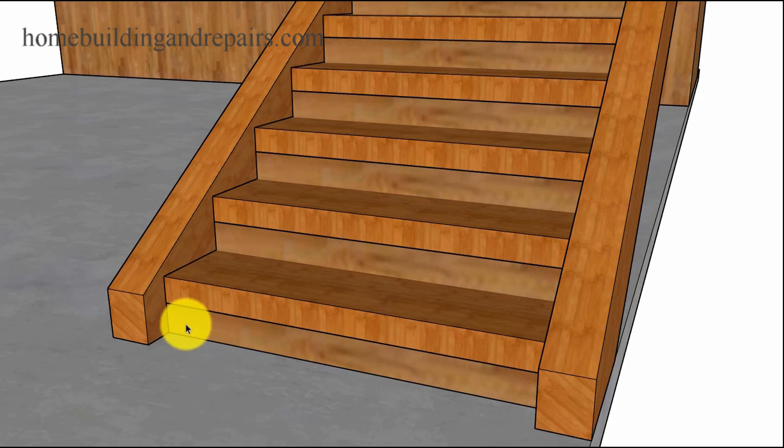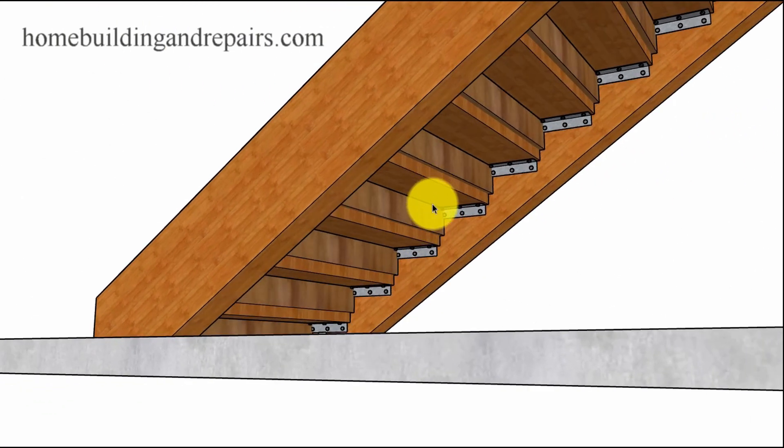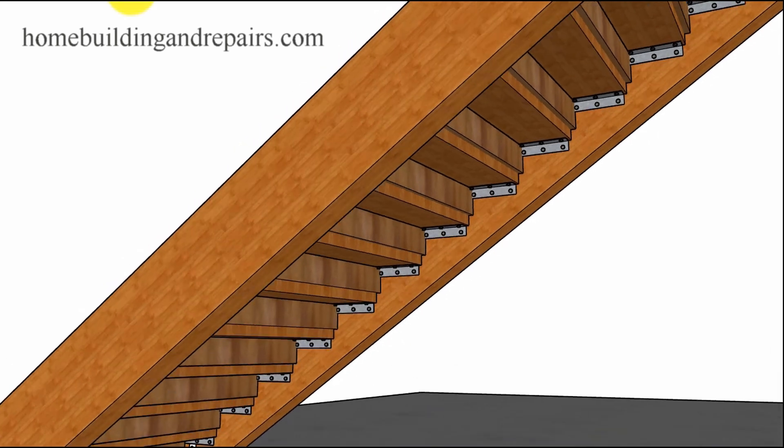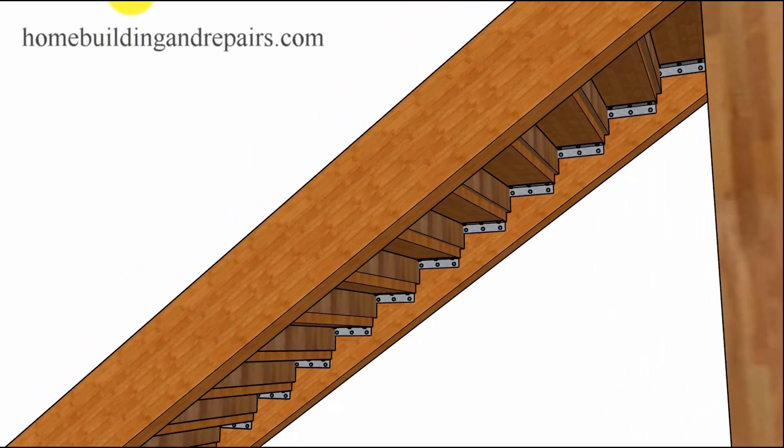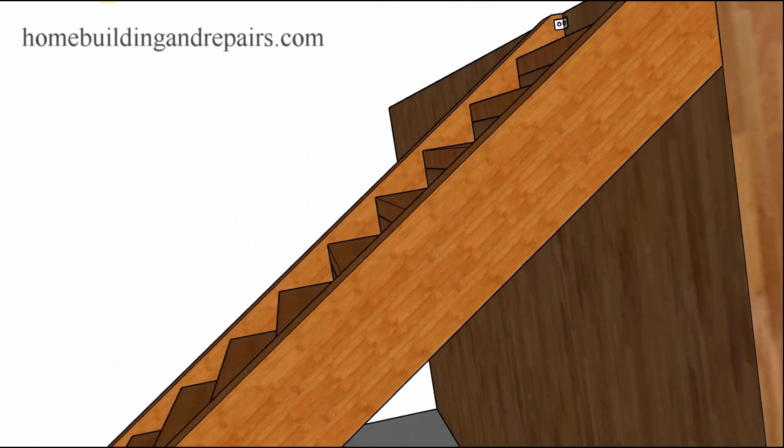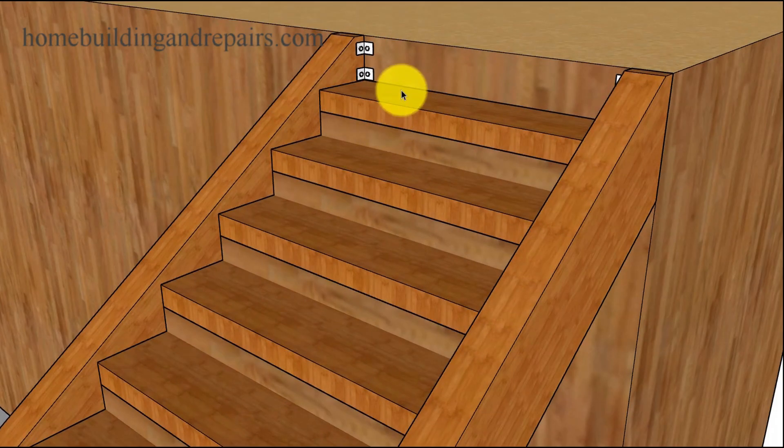Another thing this stairway required was 2x6 risers. Something that would prevent the fire from burning through. And it had to be an inch and a half thick to provide the 1-hour burn-through rating. So I just probably, I'm guessing, I just put 2x6 underneath the tread, something like this, and then nailed them to the back of the treads, the 4x12 treads. Had to be a solid barrier all the way through. Again, for the fire.